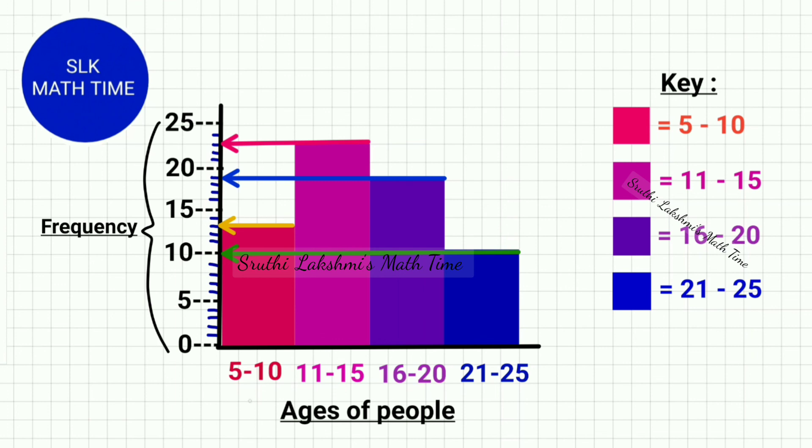And sometimes if they don't have a range or number beneath the bars, they have a key. So this pink bar means 5 to 10 and this purple bar means 16 to 20 and the blue bar means 21 to 25. So this is how histograms are used. Thanks for watching.